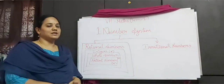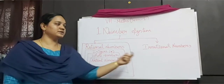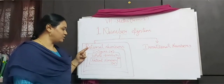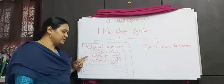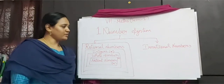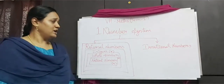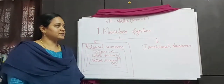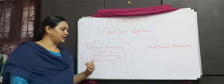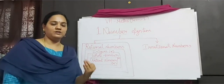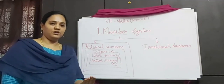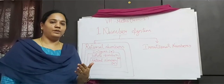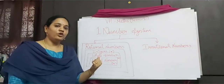The number system is classified as rational numbers as well as irrational numbers. Rational numbers include integers, whole numbers, and natural numbers. In your upcoming classes you will learn about rational and irrational numbers. In 7th standard first term we will be learning about integers — addition, subtraction, multiplication, division, properties of integers, as well as some statement problems involving these 4 operations.